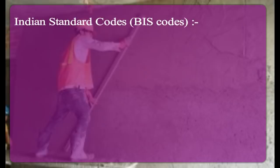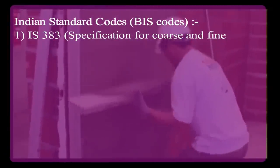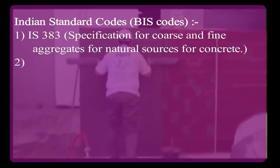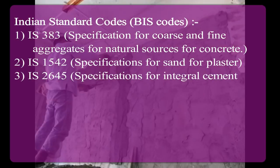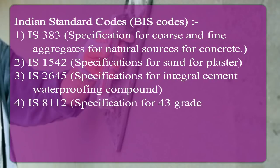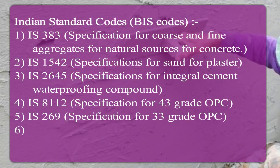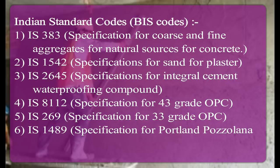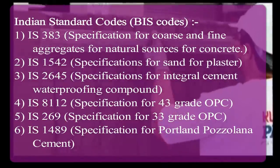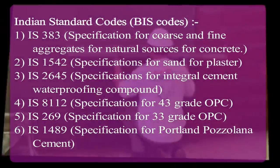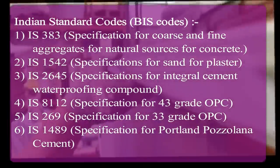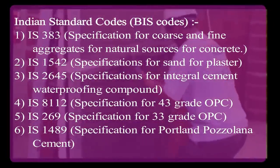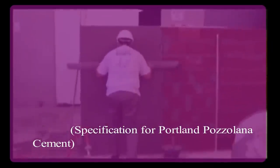Talking about Indian standards, the BIS codes include: IS 383 — specification for coarse and fine aggregate from natural resources for concrete; IS 1542 — specification for sand for plaster; IS 2645 — specification for integral cement waterproofing compound; IS 8112 — specification for 43 grade OPC; IS 269 — specification for 33 grade OPC (OPC is Ordinary Portland Cement); and IS 1489 — specification for Portland Pozzolana Cement (PPC). With the help of these Indian standard codes, we are capable of mixing and using proper ingredients for concrete and plastering surfaces.